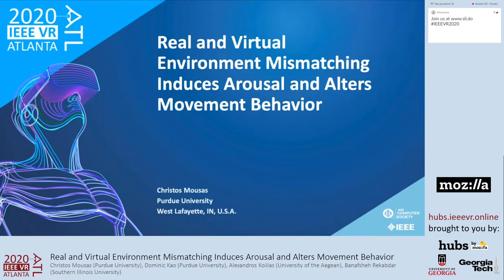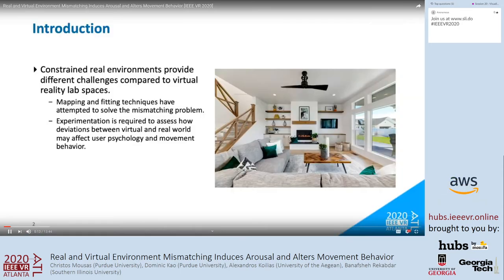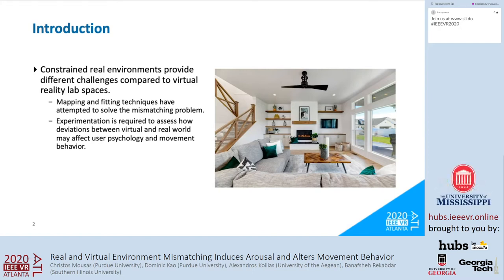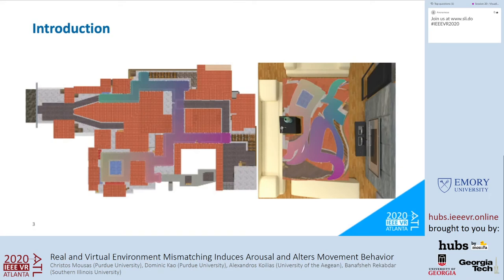Hello everyone. I'm Christos Mosas from Purdue University and I will present my research entitled 'Real and Virtual Environment Mismatching Induces Arousal and Alters Movement Behavior.' Experiencing a virtual environment while being in a constrained real environment might be problematic. Moving within that real environment while wearing a head-mounted display may alter the psychological state of participants due to mistrust of the real environment. Constrained real environments provide different challenges compared to VR lab spaces — for example, in home or office VR setups, furniture constrains the walkable area, whereas VR labs are typically large empty rooms.